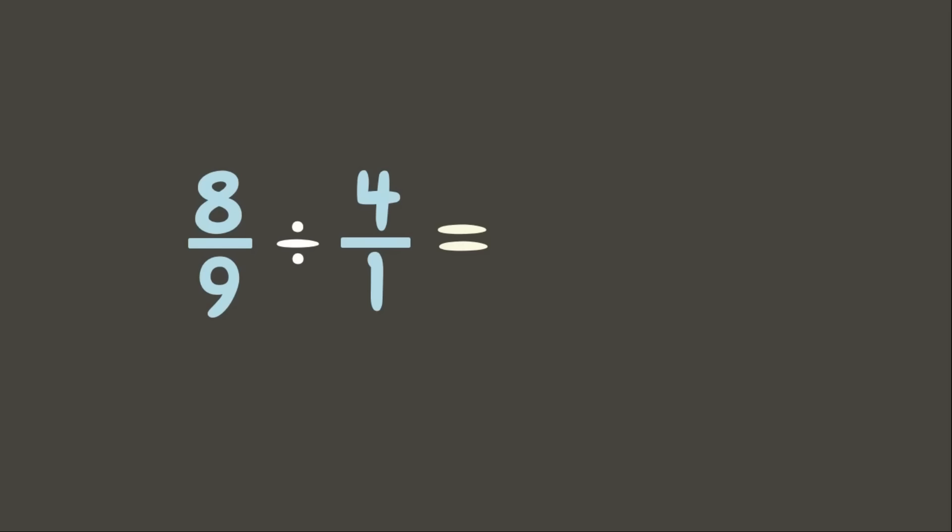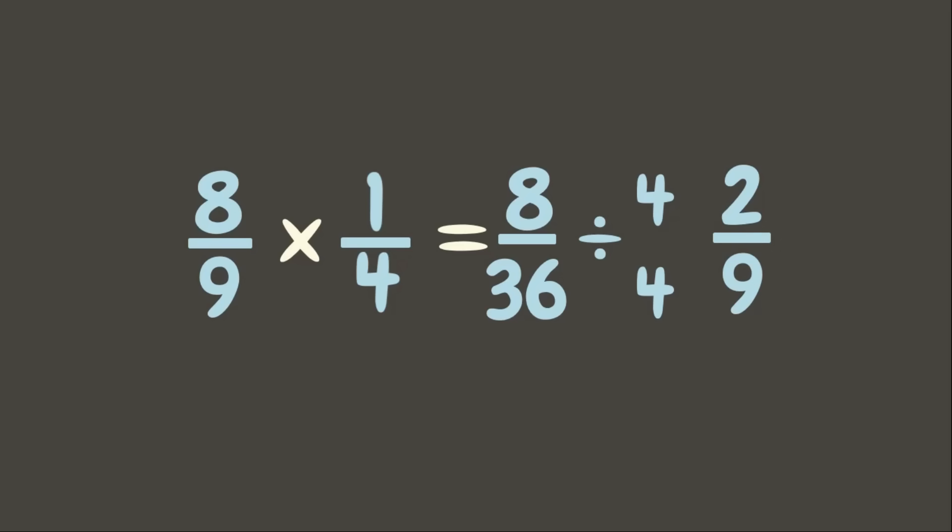And then let us get the reciprocal of the divisor. There! Now change division into multiplication. Let us multiply: 8 times 1 is 8, 9 times 4 is 36. Let us simplify our answer. 8 and 36 can be divided by their common factor 4. 8 divided by 4 is 2, 36 divided by 4 is 9. Now two-ninths is our final answer.